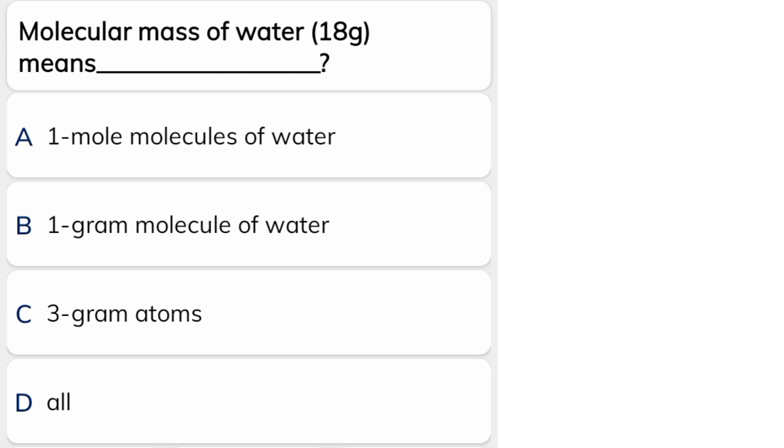If we talk about 18 gram molecular mass, what is possible? Correct answer is D. One mole molecule of water, one gram molecule of water, or three gram atoms. Because if we talk about water, it is H2O, so there are three atoms involved.